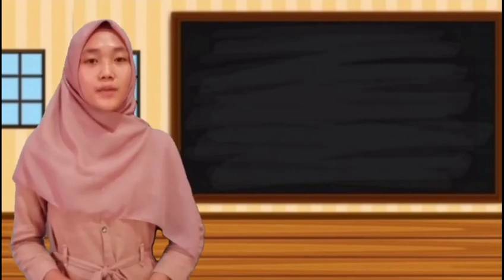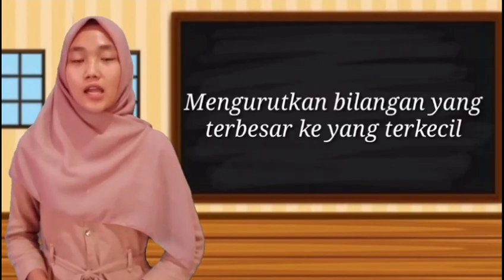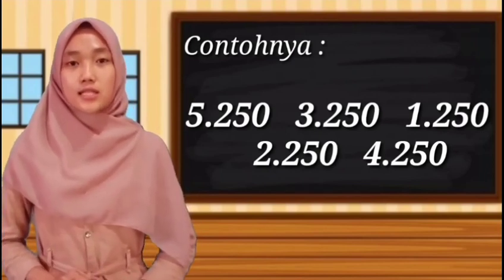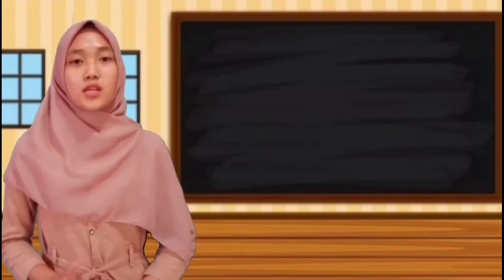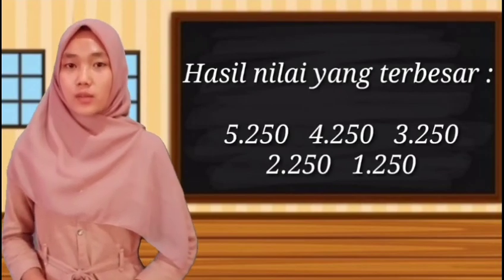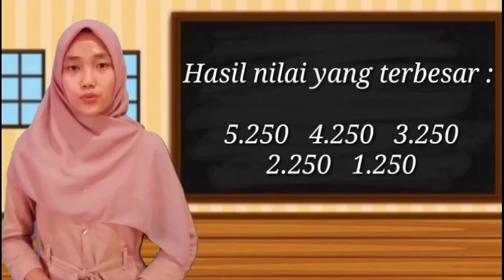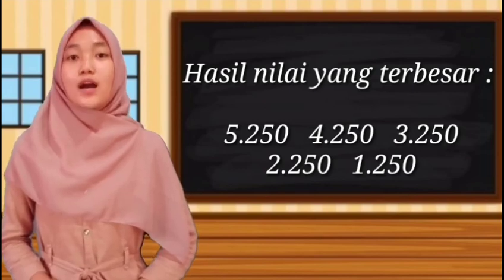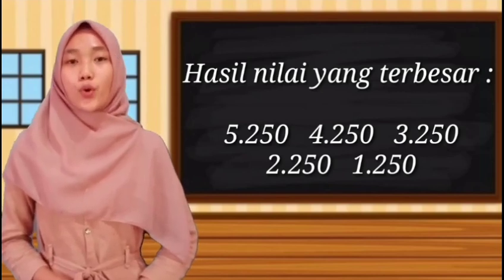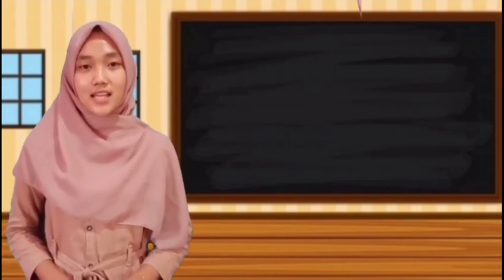Selanjutnya kita mengurutkan bilangan dari yang terbesar ke yang terkecil. Contohnya sama seperti yang pertama secara acak, kita fokuskan kepada nilai yang paling terbesar di depannya, yaitu 5.250, 4.250, 3.250, 2.250, dan 1.250. Itu yang termasuk ke dalam mengurutkan bilangan cacah. Sekian penjelasan tentang materi bilangan cacah.